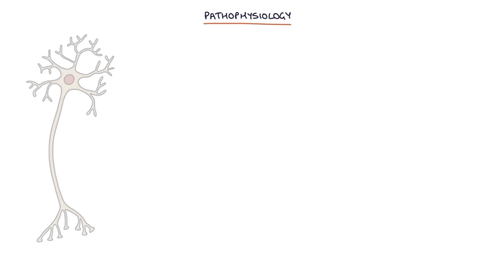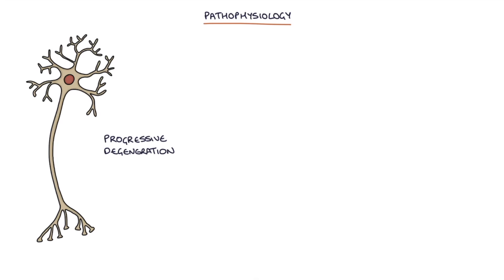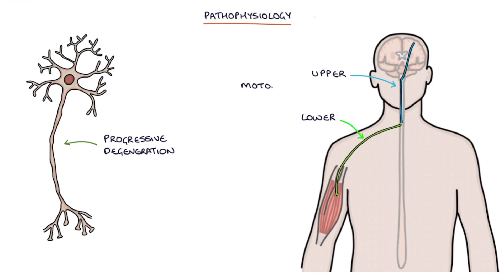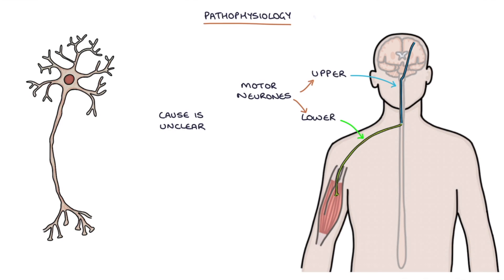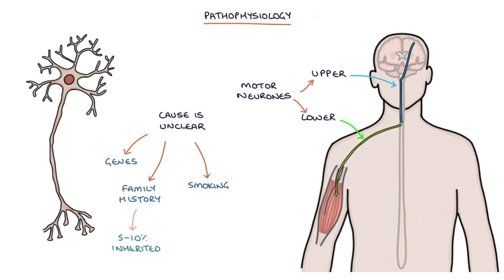Motor neuron disease involves a progressive degeneration of both the upper and lower motor neurons. The exact cause is unclear, although several mechanisms have been considered. Many genes have been linked with an increased risk of developing the condition, and family history is important as around 5–10% of cases are inherited. There also seems to be an increased risk with smoking, exposure to heavy metals, and certain pesticides.